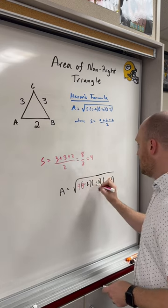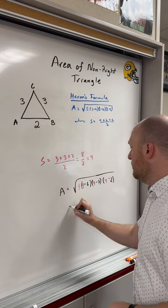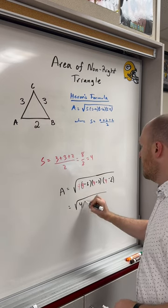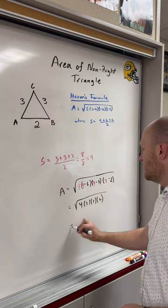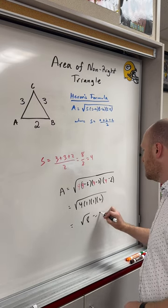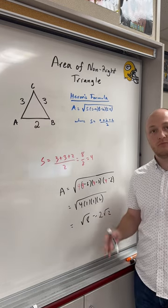Plugging in S, we get the square root of 4 times 1 times 1 times 2. This is equal to the square root of 8, which is equal to 2 square root of 2. Easy.